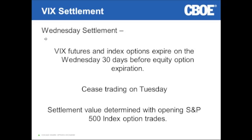Holding a position from close Tuesday evening until finding out what the settlement price is on Wednesday morning — there's some risk involved. For example, if you're short the November VIX futures contract and settlement was a couple of points higher than where that futures contract went out the night before, you're not going to be happy. But you will be able to see exactly how the settlement was determined. They've tried to make this as transparent a process as possible.